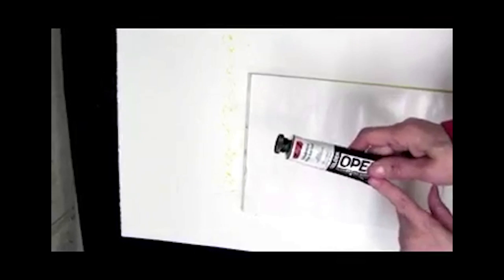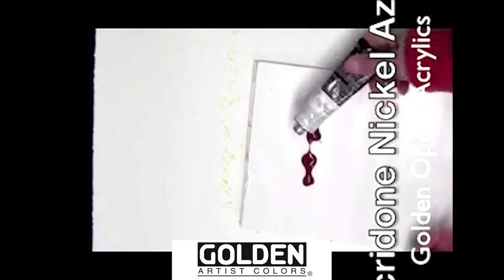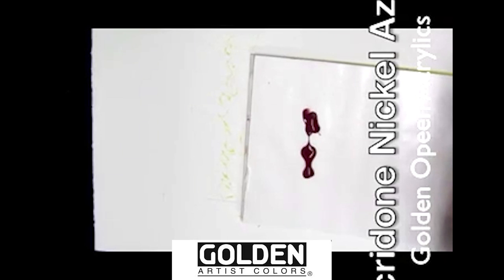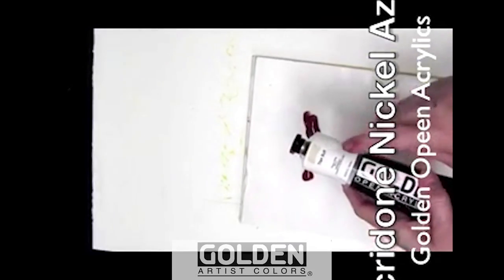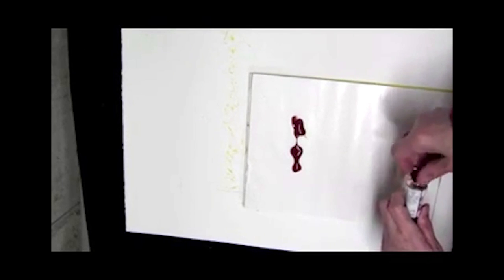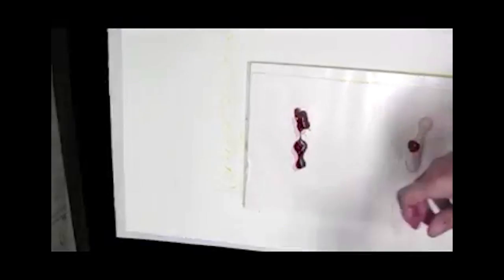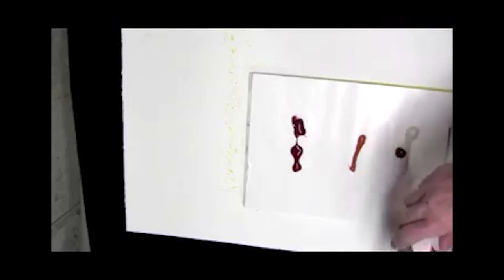Now I'm going to print right over that with my first layer. I'm using Golden Open Acrylics because they give me more working time. I don't want it to be a solid nickel azo gold all the way up, so I'm adding some Titan Buff, an off-white color, and some Indian Yellow Hue. I'm hoping to get an ombre effect, darker at the bottom and lighter at the top.